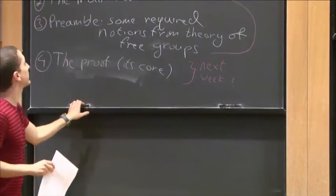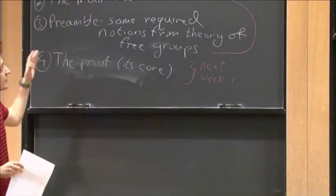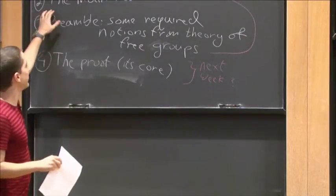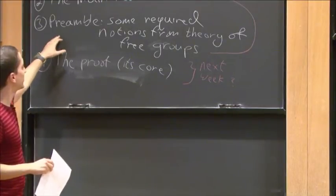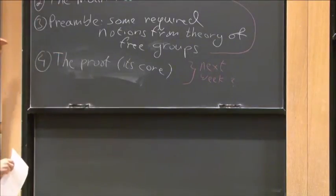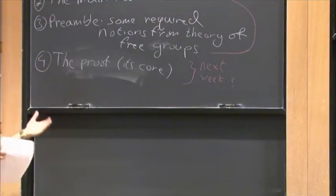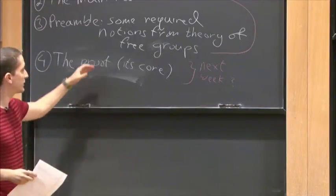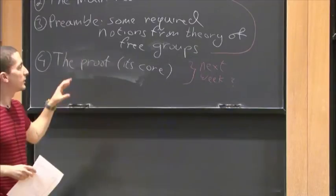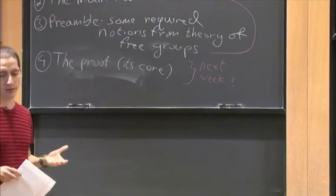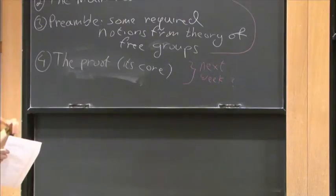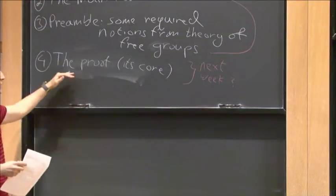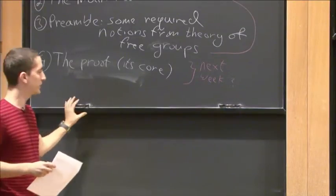I will start with the introduction to word maps and say just a few words about the main lines of research. Then I'll state the main result and explain it. Then I'll start talking about the proof, but first I will talk about some notions that exist also for other purposes. I will also prove some classical facts about free groups, so that you get used to the notions and we will use the same language afterwards in the proof. Probably only next week I'll get to the core of the proof of the main result.